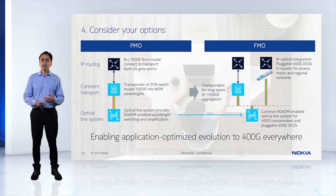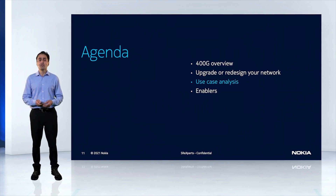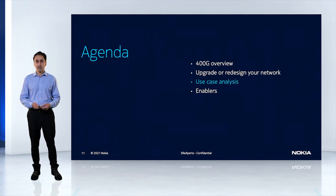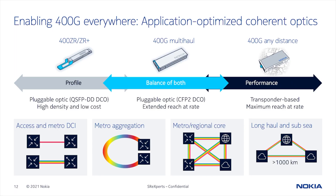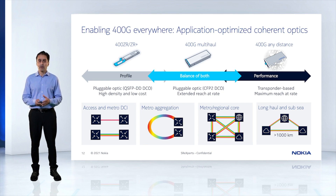After seeing all that, we're going to cover a use case. Before going into the use case detail, we want to see where we're targeting this — we are looking at 400G ZR and ZR+ in an access and metro aggregation environment. So what is our use case?